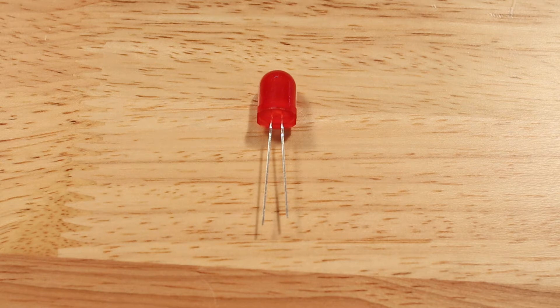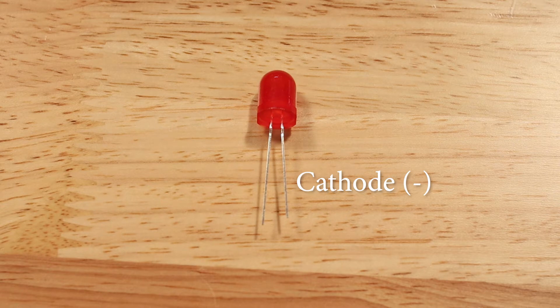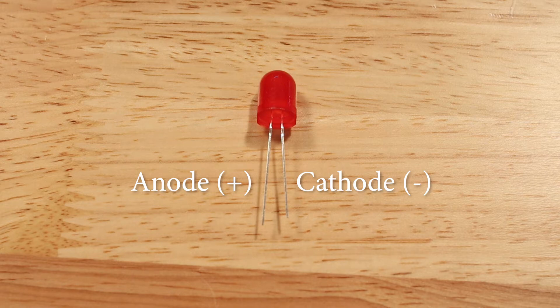Here is a 10mm LED. LEDs have two legs, or leads. The short one is called the cathode and is the negative lead. The longer one is the anode and is the positive lead.